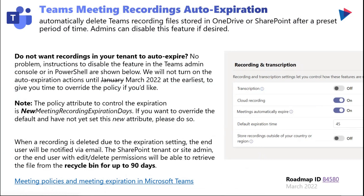A controversial feature was recently planned to launch: a new policy attribute to control the expiration of meeting recordings. Microsoft had planned to launch in January 2022 a default where meetings with recordings in your tenant would auto-expire after 30 to 60 days. After quite a bit of feedback, they pushed this out to March. Stay tuned — we'll give you updates as we get nearer to March on what the default is and how you can extend that auto-expire feature in your tenant.